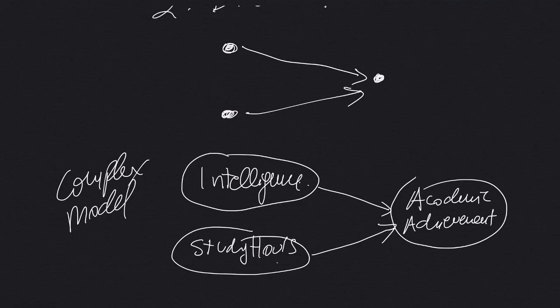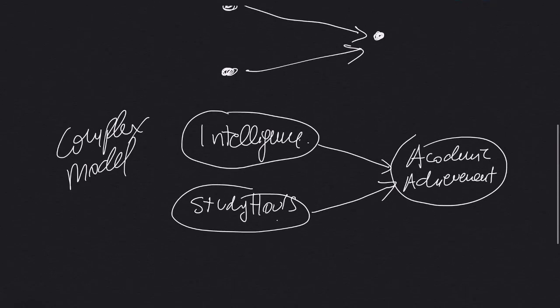Now this model is saying other things by what is not there. It's saying a lot. So it's saying that study hours don't cause intelligence, and intelligence doesn't cause study hours. They are not related. We are not establishing a causal link there. And we are saying that there is nothing else that is causing academic achievement. If there is something else that we don't know, we add this U as an unknown variable that may cause academic achievement. And U may also cause study hours and intelligence.